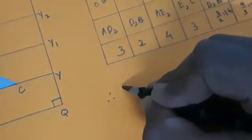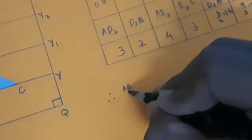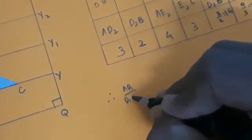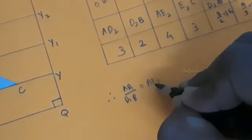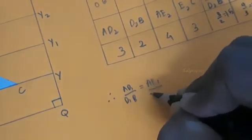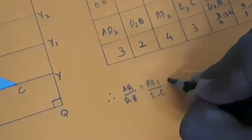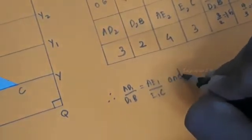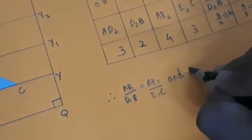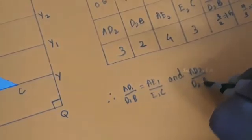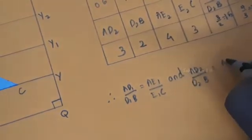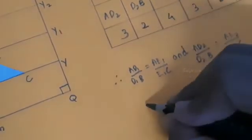From the table we can see that AD1/D1B is equal to AE1/E1C, and AD2/D2B is equal to AE2/E2C. Hence the Basic Proportionality Theorem, or Thales' Theorem, is verified. Thank you.